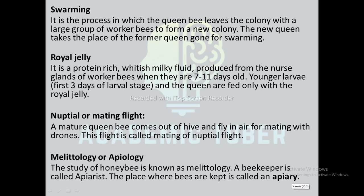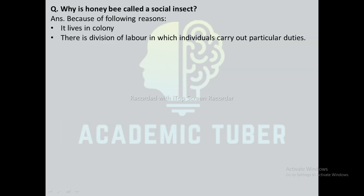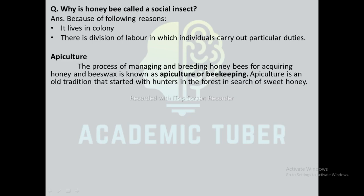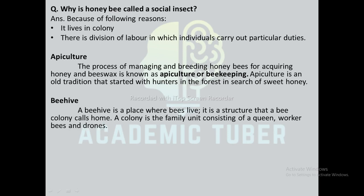Why is the honeybee called a social insect? The honeybee is called a social insect because it lives in a colony and there is a division of labor in which individuals carry out particular duties. Apiculture: the process of managing and breeding honeybees for acquiring honey and bee wax is known as apiculture or beekeeping. Apiculture is an old tradition that started with humans hunting in the forest in search of sweet honey.